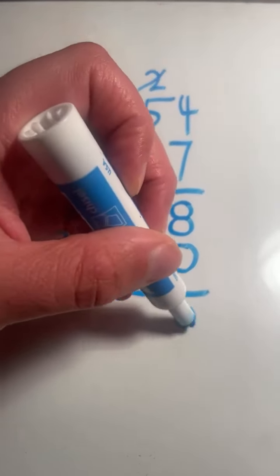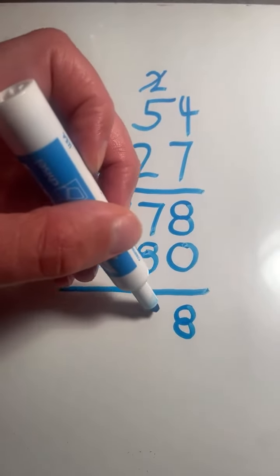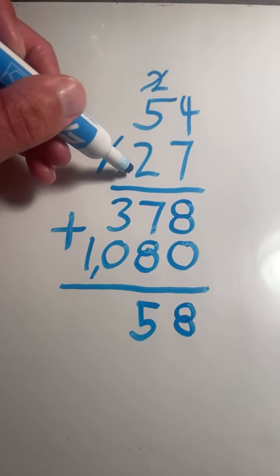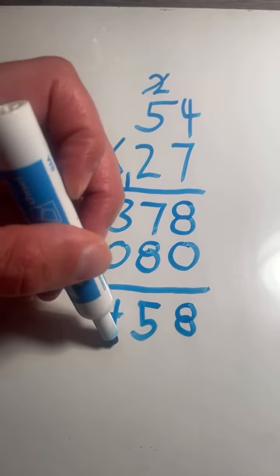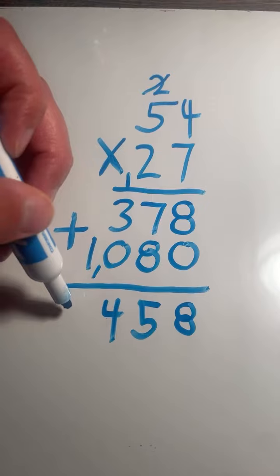8 plus 0 equals 8. 7 plus 8 equals 15. 5 carry the 1. 1 plus 3 equals 4. Plus 0 still equals 4. 0 plus 1 equals 1.